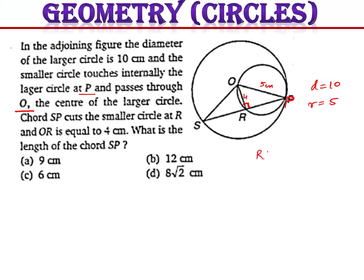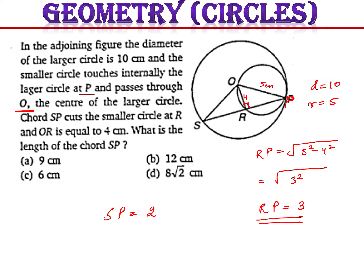RP equals √(5² − 4²) = √9 = 3. Since the perpendicular from the center bisects the chord, SP equals 2 times RP, which is 2 times 3 = 6 centimeters. The length of chord SP is 6 centimeters. This is a straightforward question. We move to the next one.